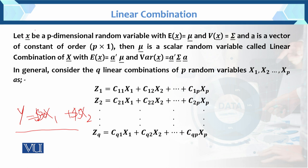Let x be a p-dimensional random vector with expected value of x equals to mu. As we have done previously, the expected value of any random variable always equals the population parameter mu. And the variance of x equals sigma, where sigma stands for the variance-covariance matrix. And a is a vector of constants of order p×1.